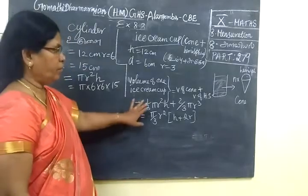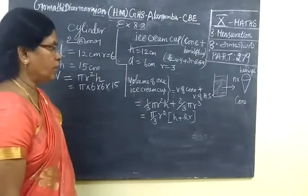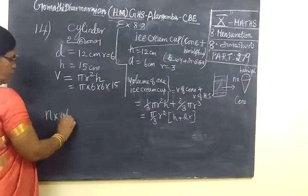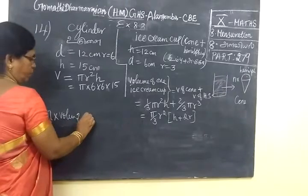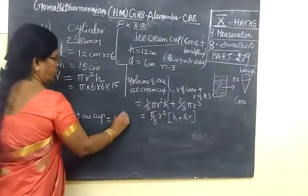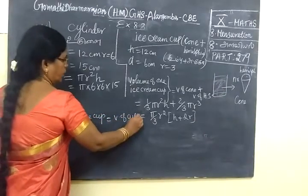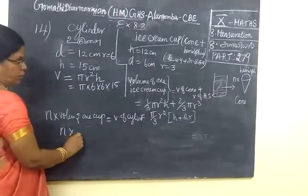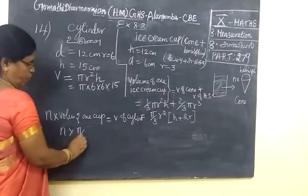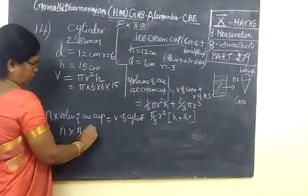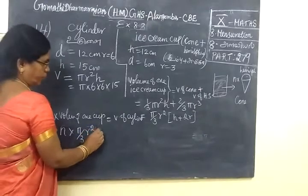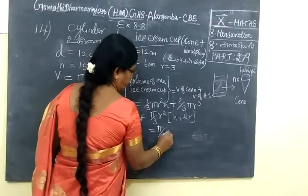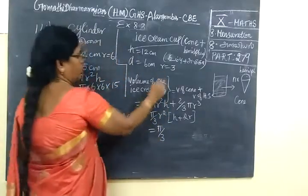Therefore, n times volume of one cup equals volume of cylinder. So, n times (1/3 π r² times (h + 2r)) equals π R² H, where R = 6 and H = 15, r = 3.